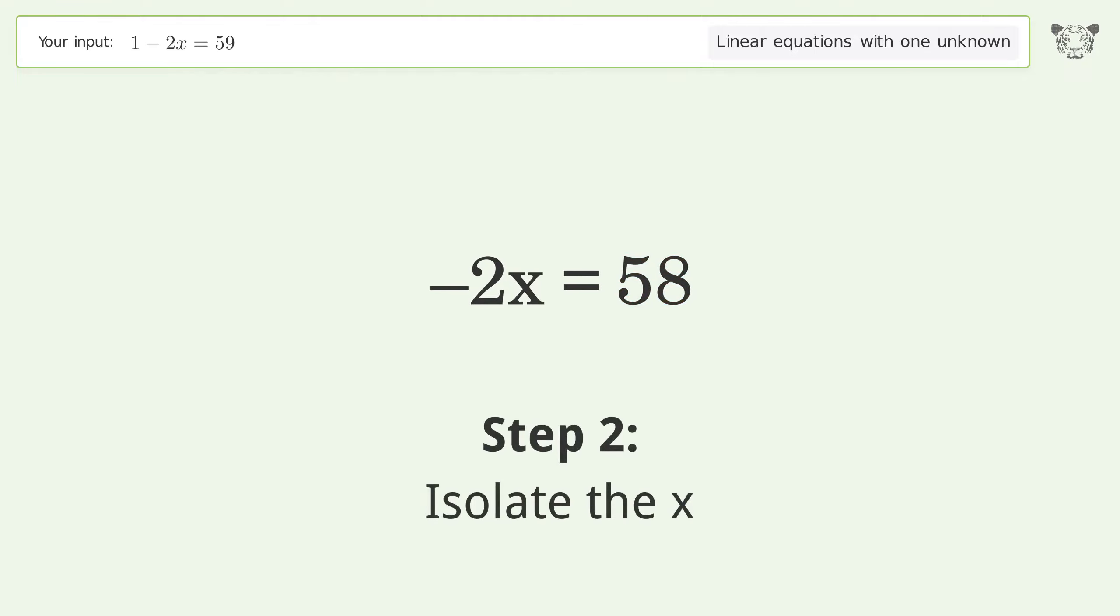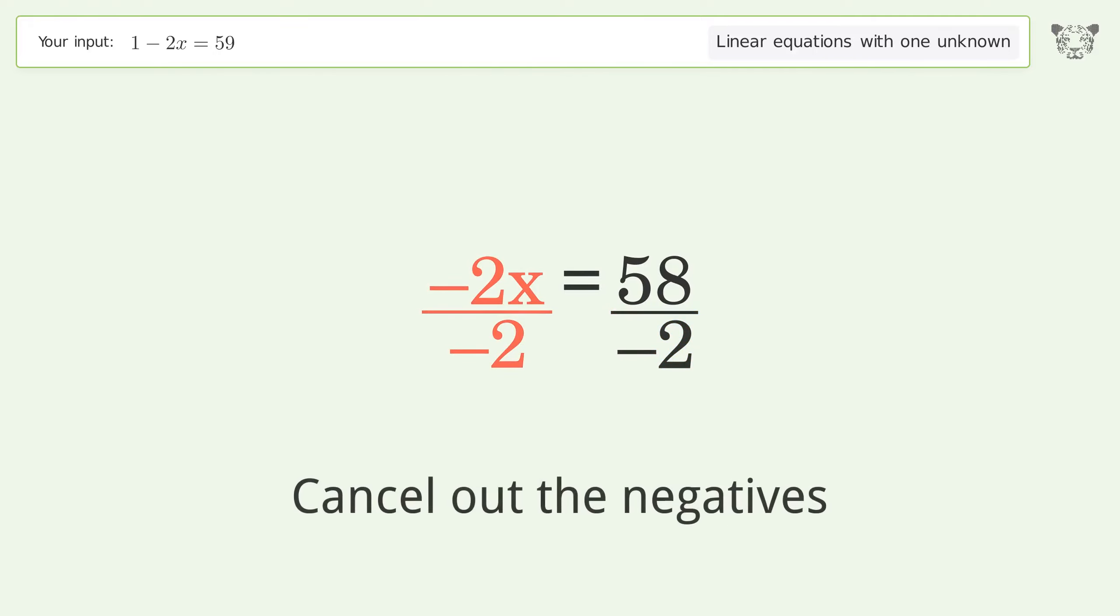Isolate the x. Divide both sides by negative 2. Cancel out the negatives. Simplify the fraction.